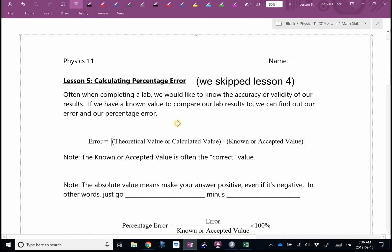Today, we're going to talk about calculating percentage error. Often when completing a lab, we would like to know the accuracy or the validity of our results. How close are we? If we have a known value, the correct value to compare our lab results to, we can find our error and then our percentage error. We can find our error - oh, I was off by 19 grams. And then I can figure out what percent I was off by. Oh, that 19 grams, I was actually only off by 3%, which would be pretty good. I was off by 84%, which believe it or not, with some of our equipment will also be pretty good because we've got lousy equipment.